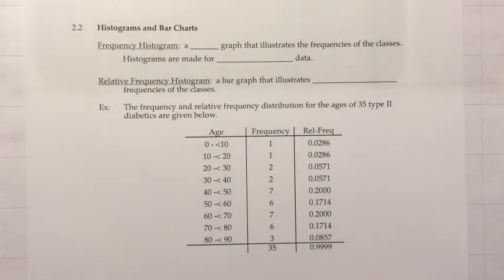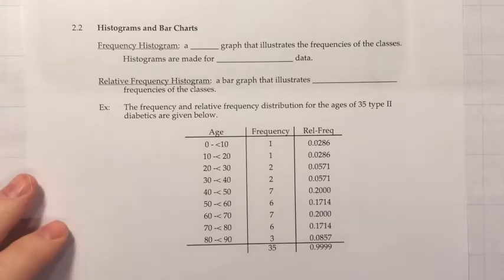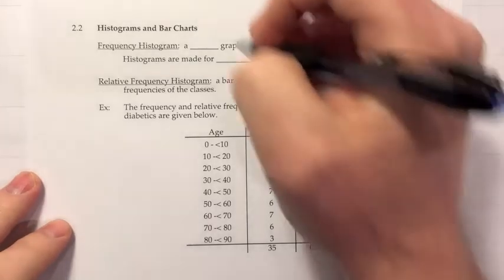Section 2.2: Histograms and Bar Charts. In this section, we're going to move from raw data that needs to be grouped to data that's already been grouped, but now we want to turn it into a graphical representation. The first type we're going to look at is called a frequency histogram, which is a bar graph that illustrates the frequencies of the classes.